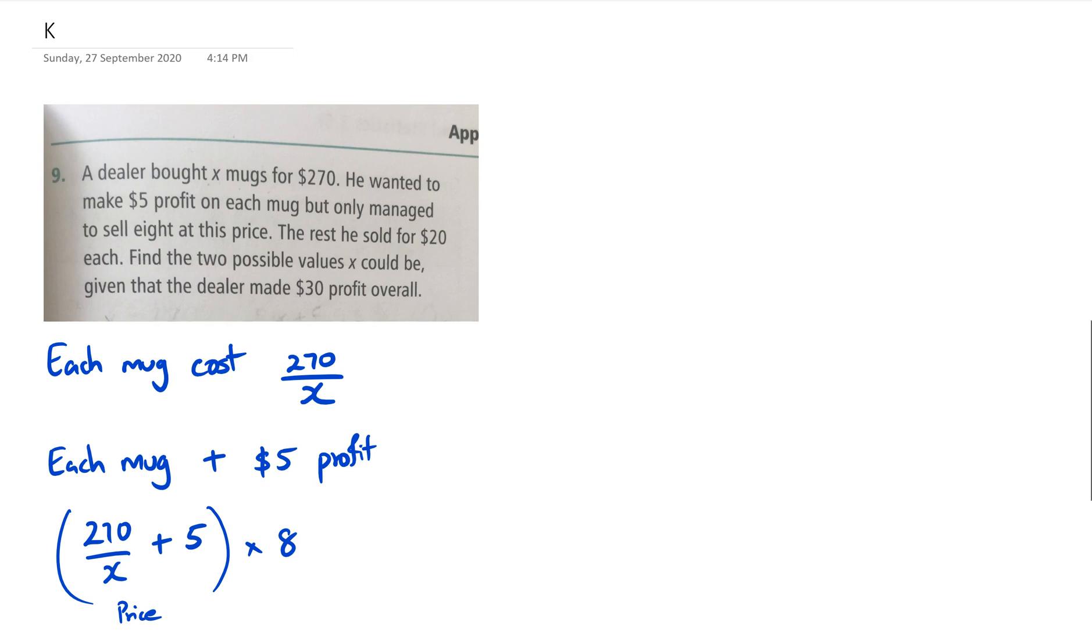Out of X mugs he bought, he sold eight, which means the remaining number of mugs is X minus 8. This remaining number of mugs he sold for $20, so we can say 20 times (X - 8).